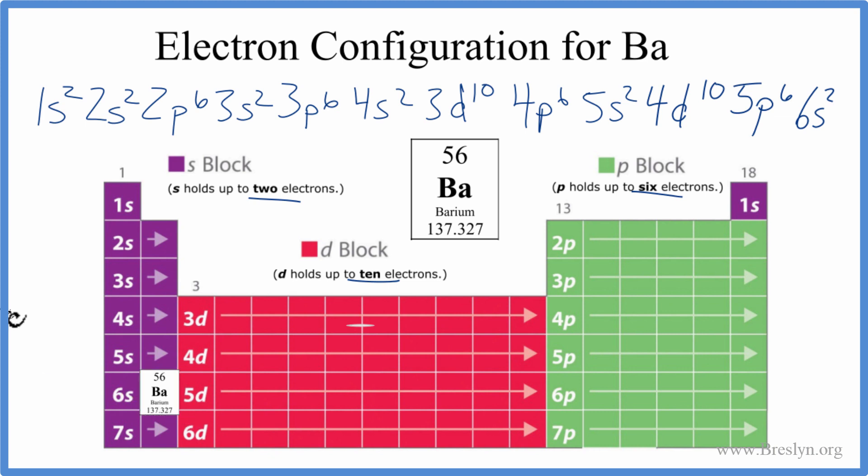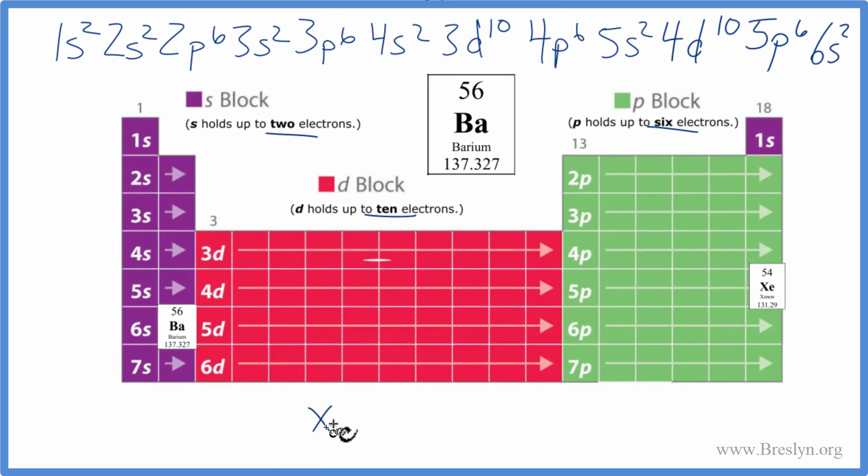We can write this in condensed notation as well. The way we do that, we find the noble gas that's before barium. That's right here, that's xenon. Then we just write Xe for xenon. We put it in brackets, and we write what's after the xenon.